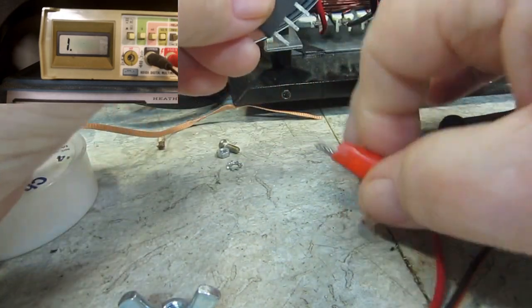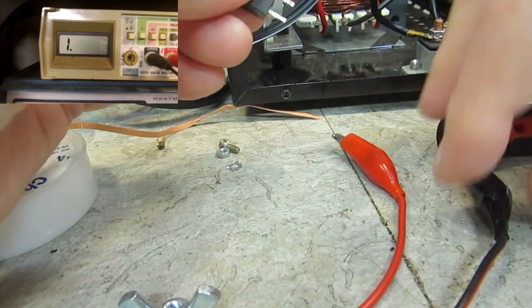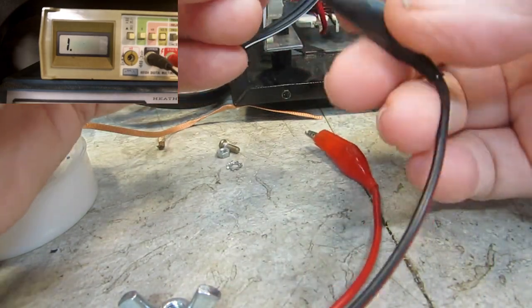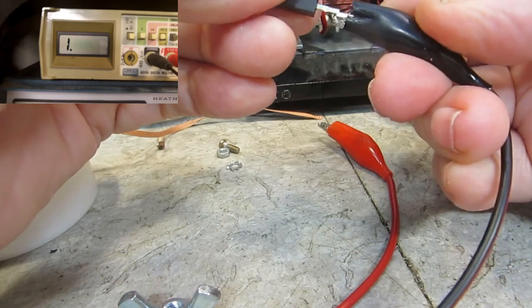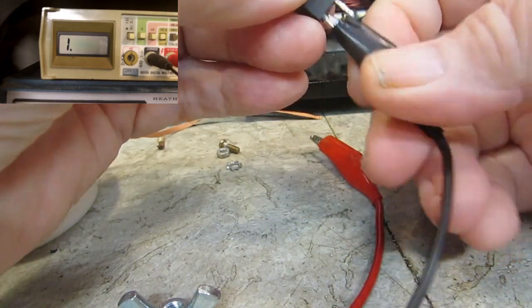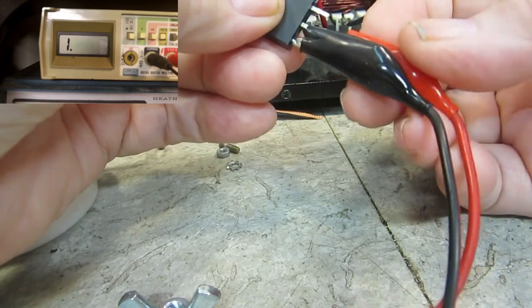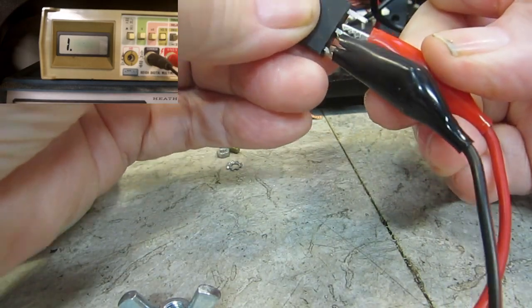Now, if I was reading my instructions right, the cathode gets the black lead. And set that up like that. Anode gets the red lead.